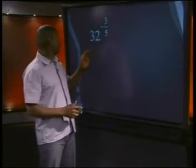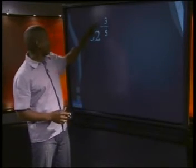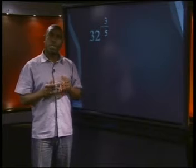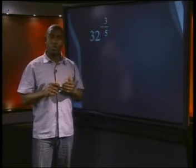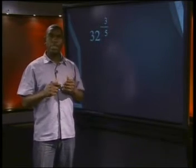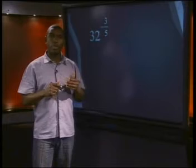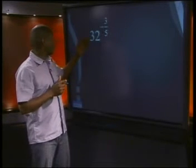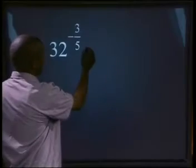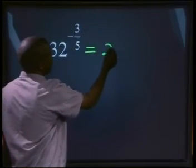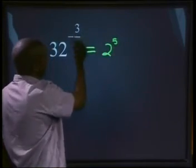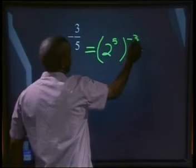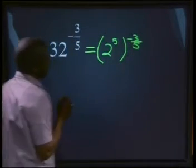Let us have a look at this one: 32 to the power of minus 3 over 5. Just remember the powers of 2 — 2, 4, 8, 16, 32, 64, 128, etc. Now what is 32? 32 will be the same as 2 to the power of 5. So 32 to the power of minus 3 over 5 is the same as 2 to the power of 5, all to the power of minus 3 over 5.